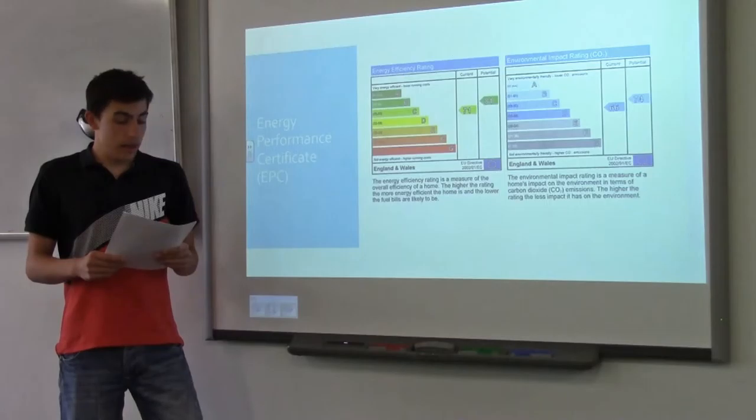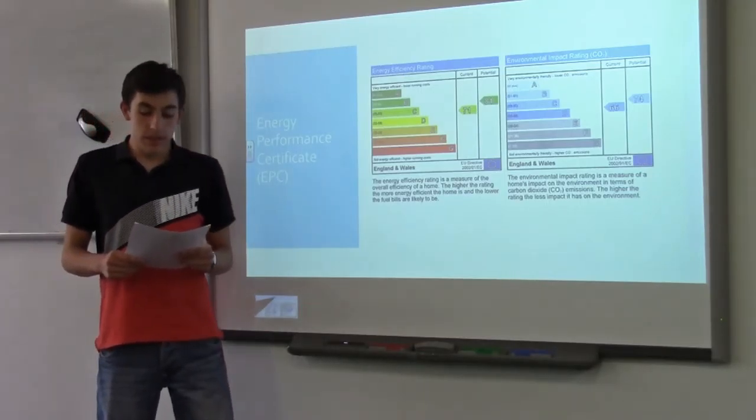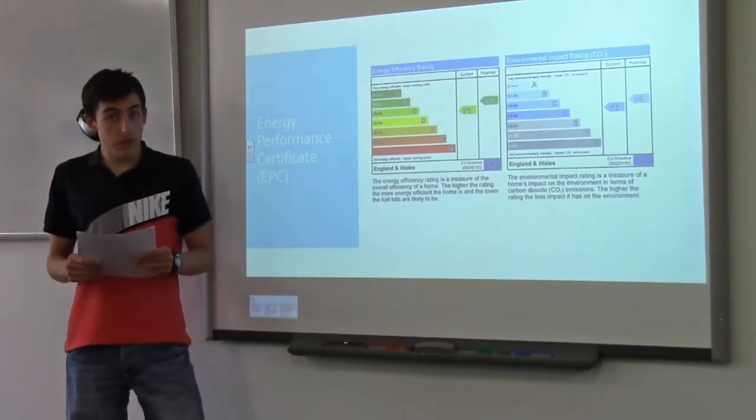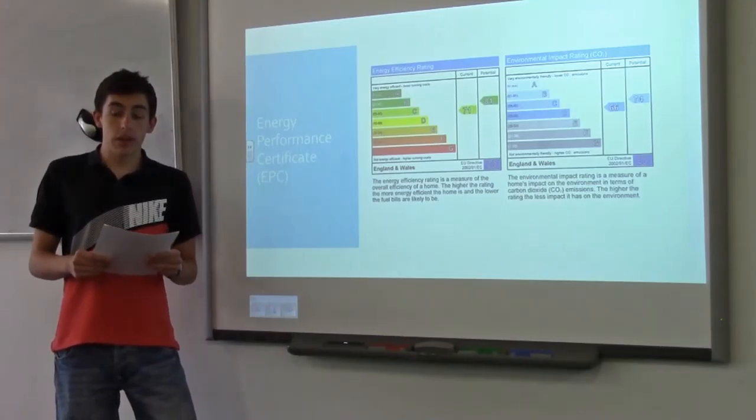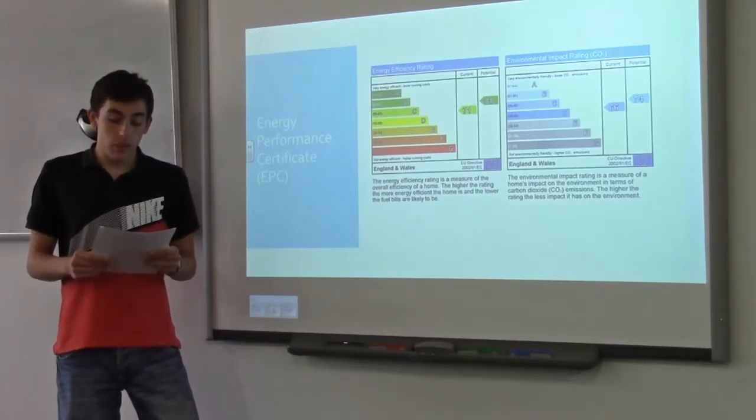Examples of the factors analysed and measured in producing an EPC of a given property are the presence of loft insulation, a domestic boiler, a hot water tank, radiators and windows with triple or double glazing.